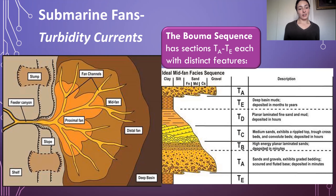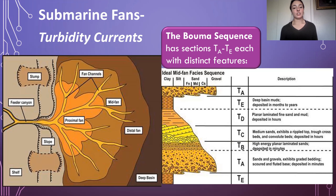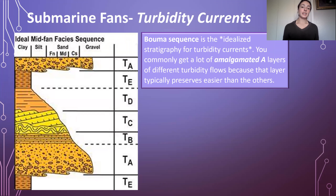Looking at the fan in this figure, the coarsest sediment deposits first in the proximal region, then finer sands deposit further out, getting finer and finer basin-ward. The really fine grains that stay in suspension longest travel furthest. This is why the Bouma sequence has a fining-upward succession. Keep in mind that the Bouma sequence represents the idealized stratigraphy for turbidity currents.